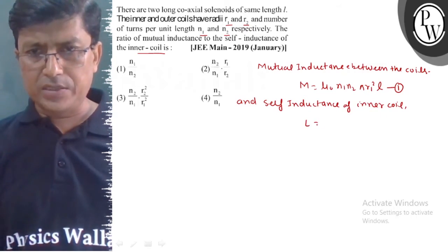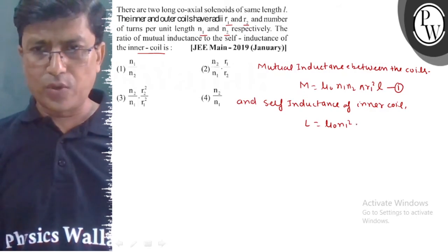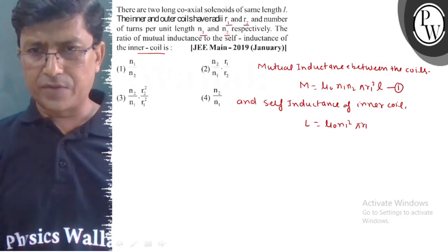Its value L is equal to mu0 N1 square, inner coil area pi R1 square.